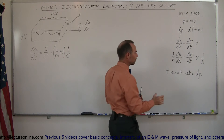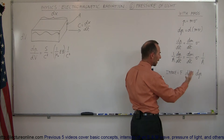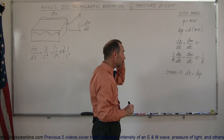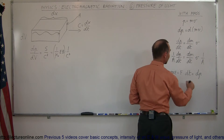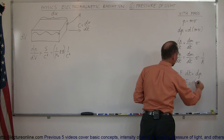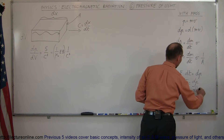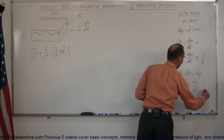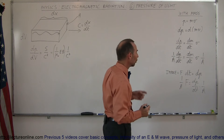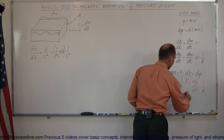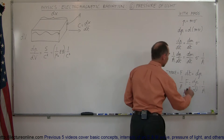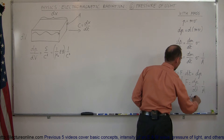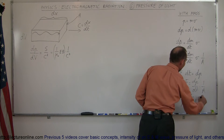Now remember the concept of impulse — impulse is force applied on an object over an amount of time, and that equates to the change in momentum. If we divide both sides of the equation by dt, we can say that F equals dp/dt. And if we multiply both sides by 1 over A, we can see that F over A — which is of course the units of pressure — is equal to the change of momentum over time, and that can be written as dm/dt times v times 1 over A.